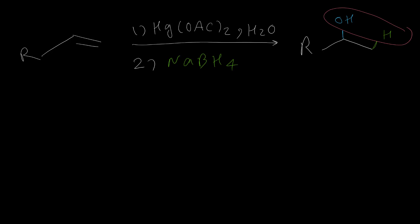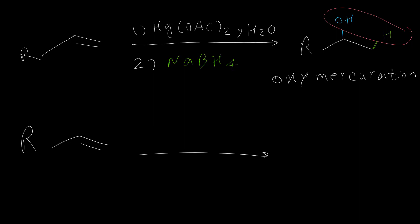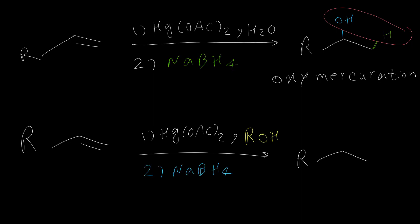This reaction is the addition of water to an alkene in the presence of mercury acetate. This reaction is oxymercuration, and if the mercuration reaction takes place in alcohol instead of water — like ROH — then in the product, instead of OH, we will see OR on the more substituted carbon. The orientation for both of these reactions is Markovnikov, and OH and OR attach to the more substituted carbon.